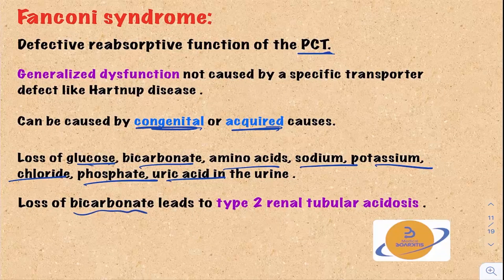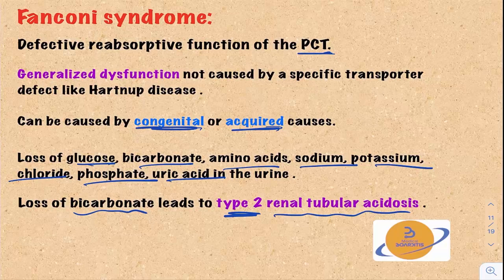The loss of bicarbonate will lead to type 2 renal tubular acidosis, which is why type 2 renal tubular acidosis is also called proximal renal tubular acidosis.